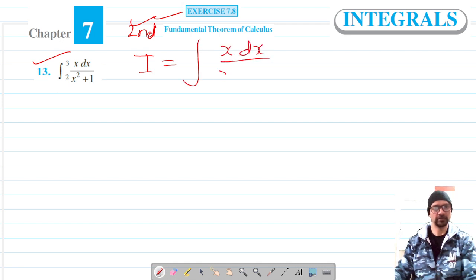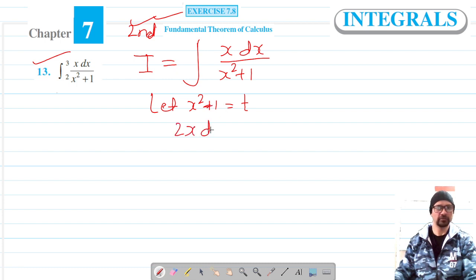x dx upon x squared plus 1. Let's substitute x squared plus 1 equals t. Differentiating this with respect to x gives us 2x dx equals dt,